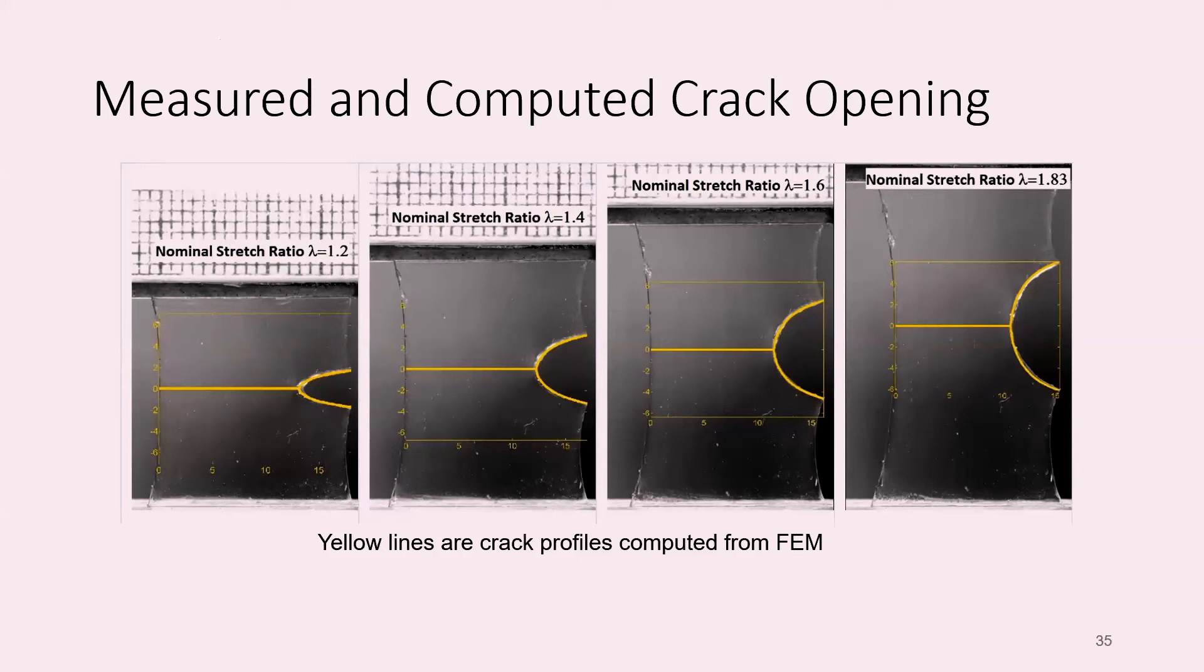Let's test our ability to accurately calculate the crack tip fields. We do this by comparing directly with experiments and also by comparing with asymptotic analysis. One experimental check is very simple. We take an edge-notched sample, load it, and measure the shape of the open crack. Then we simulate that experiment using the constitutive model implemented as a plane stress user material in Abacus. We compare the crack opening from the experiments to the crack opening from the FEM. The yellow lines are the predicted crack opening and the gray is a photograph of the sample. We see very good agreement between the calculated and measured shape of the crack.